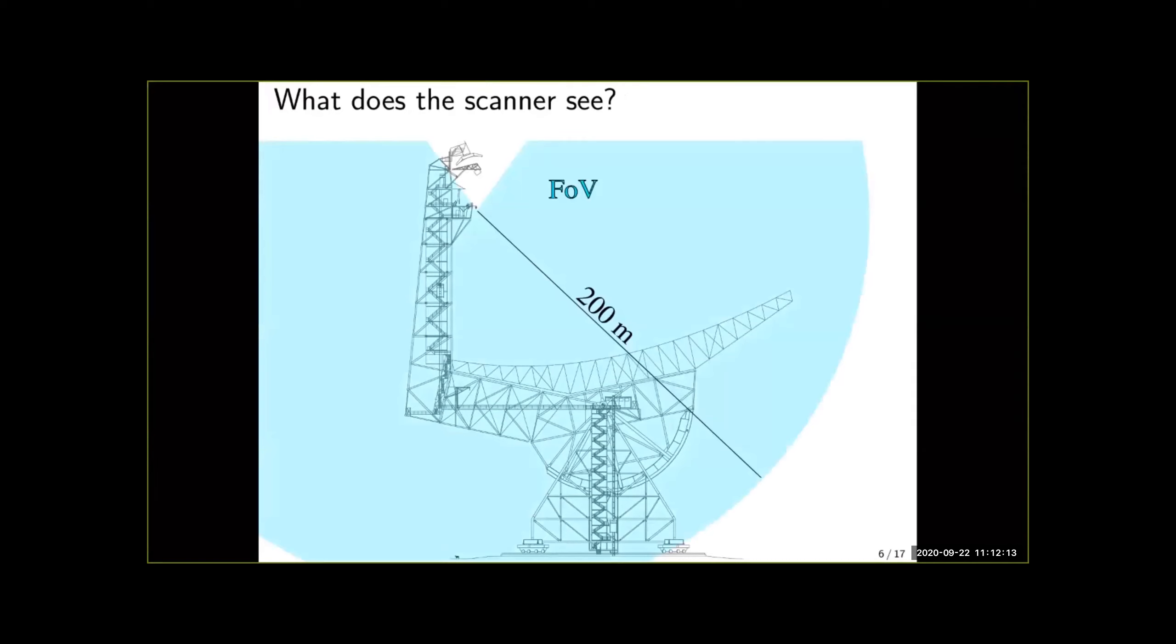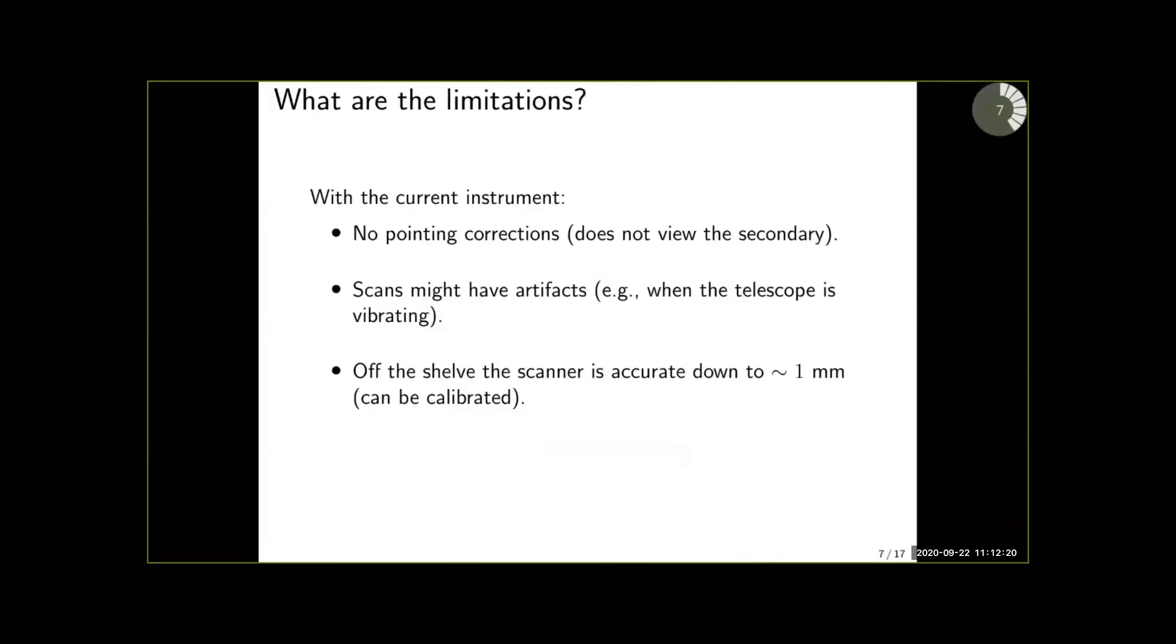And from there LASI hangs upside down which enables it to see the whole primary reflector. From this position though it cannot see the secondary mirror of the telescope.